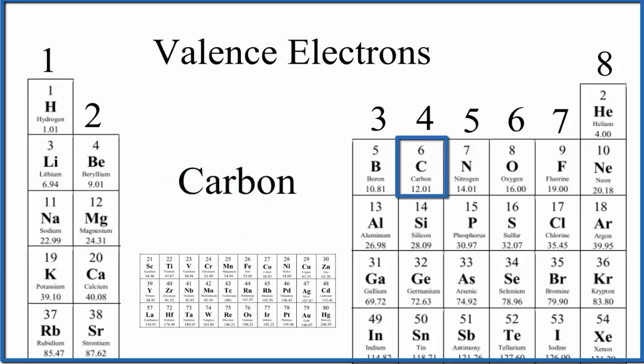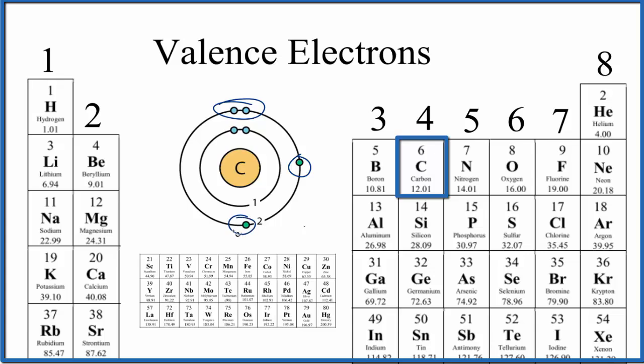Carbon. How many valence electrons does carbon have? Carbon right here, group 14, sometimes called 4a, it has four valence electrons. Two, three, four.